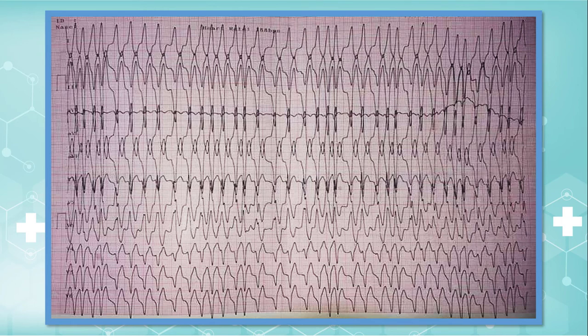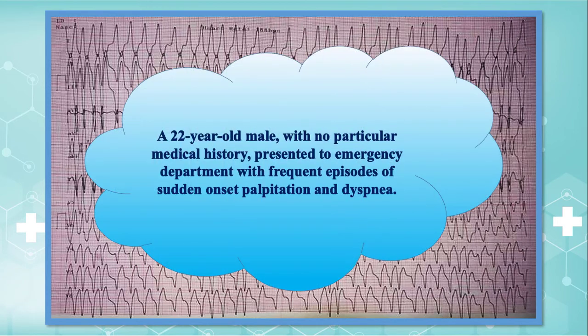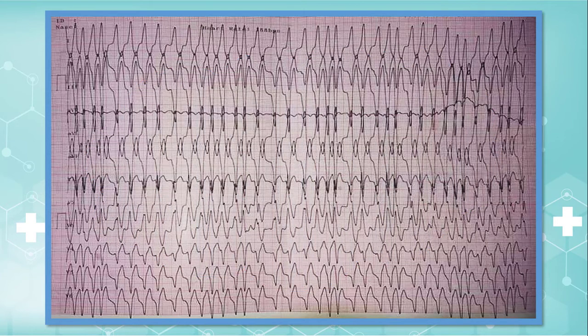The present EKG is obtained from a 22-year-old male with no particular medical history, who presented to the emergency department with frequent episodes of sudden-onset palpitation and dyspnea. What do you think about the surface electrocardiogram? What is your interpretation?